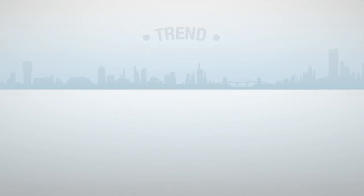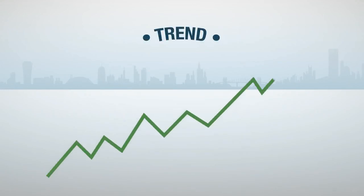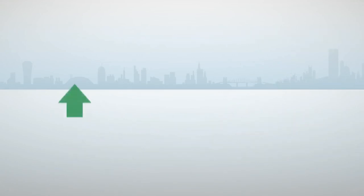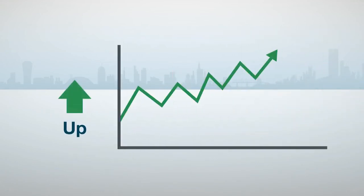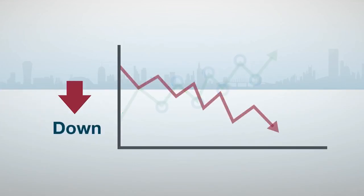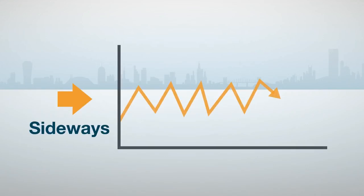Let's start with the first technique: trend. Trend is the general direction a stock's price is moving. There are three kinds of trends: up, which is a series of higher highs and higher lows; down, which is a series of lower highs and lower lows; and sideways, which has roughly equal highs and lows.